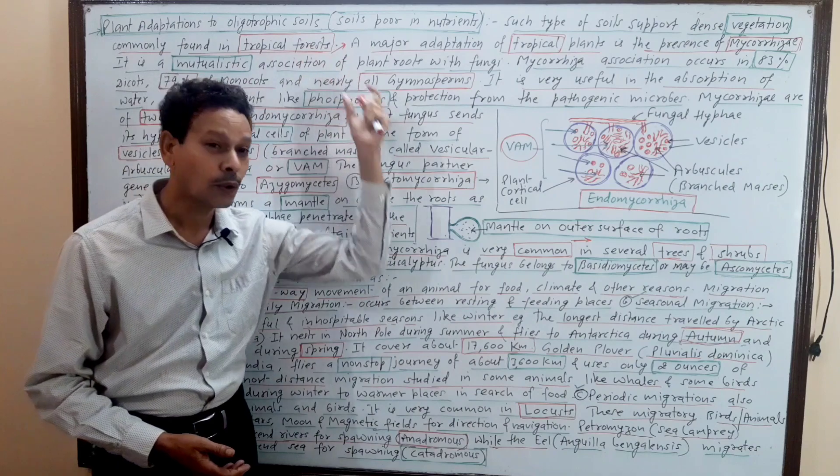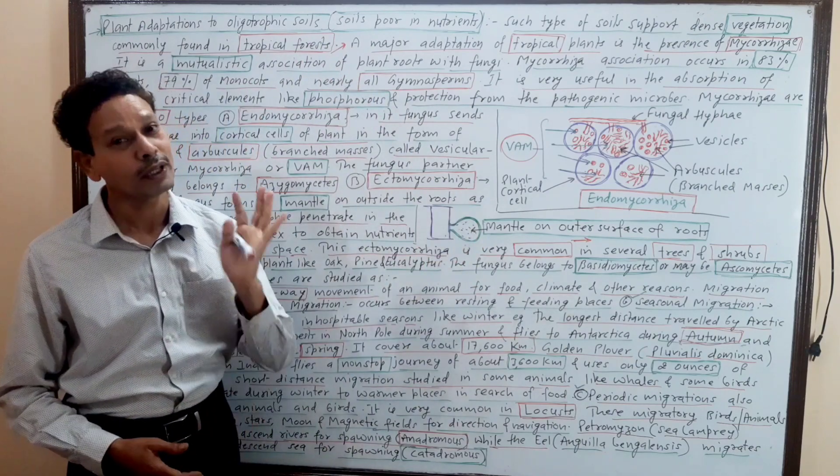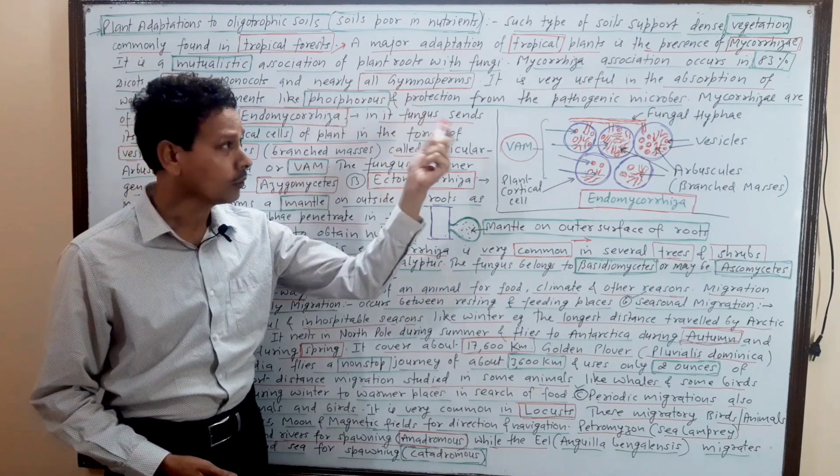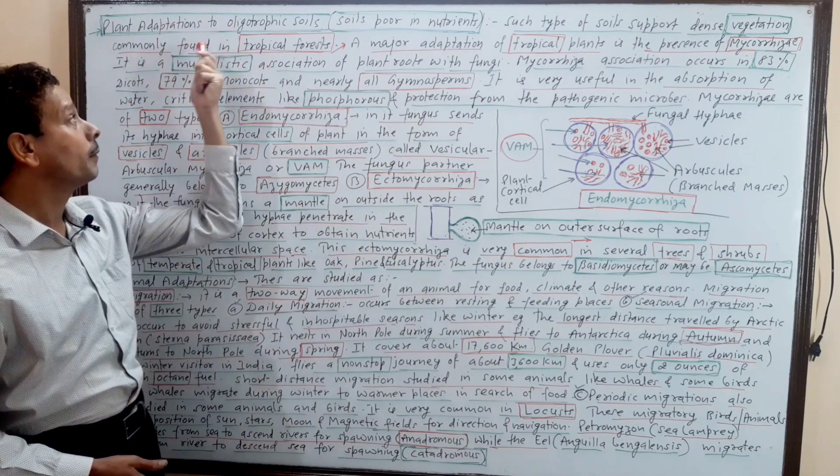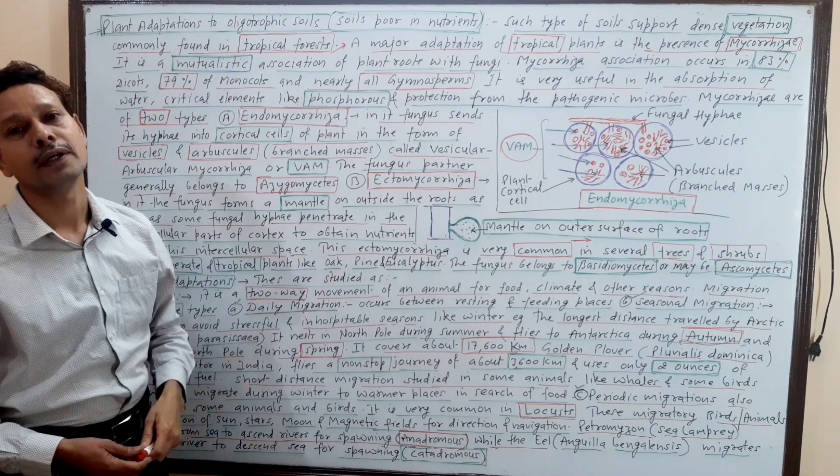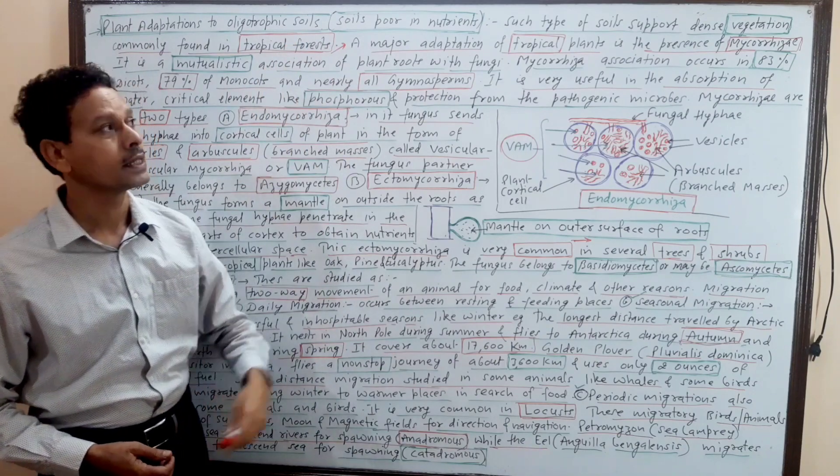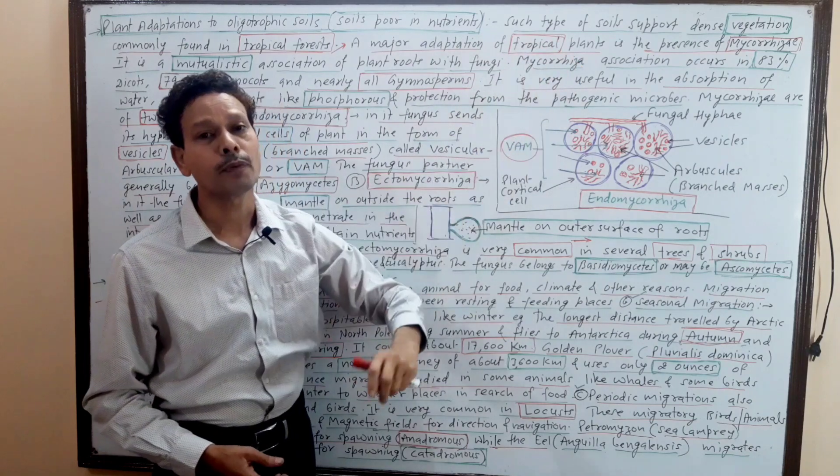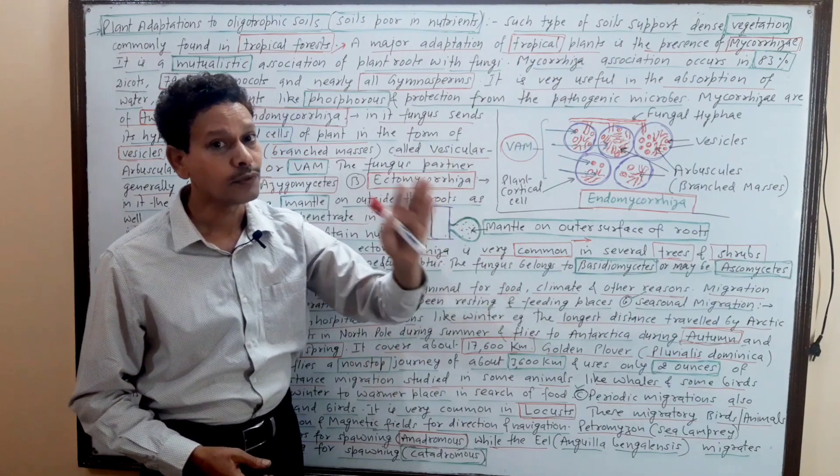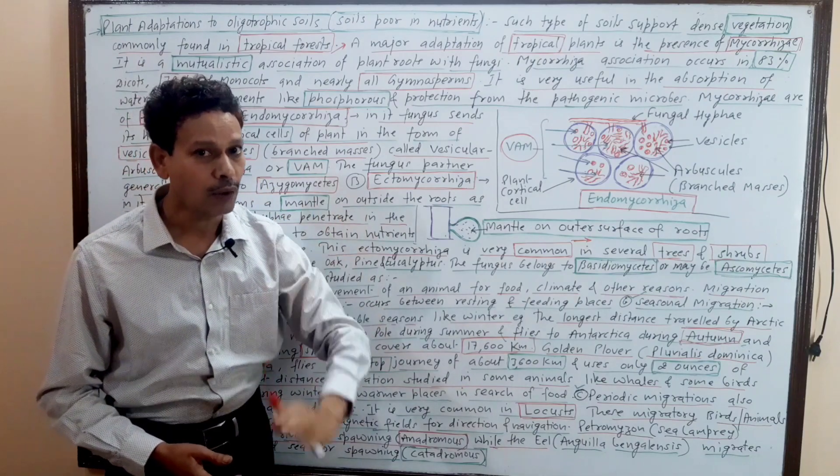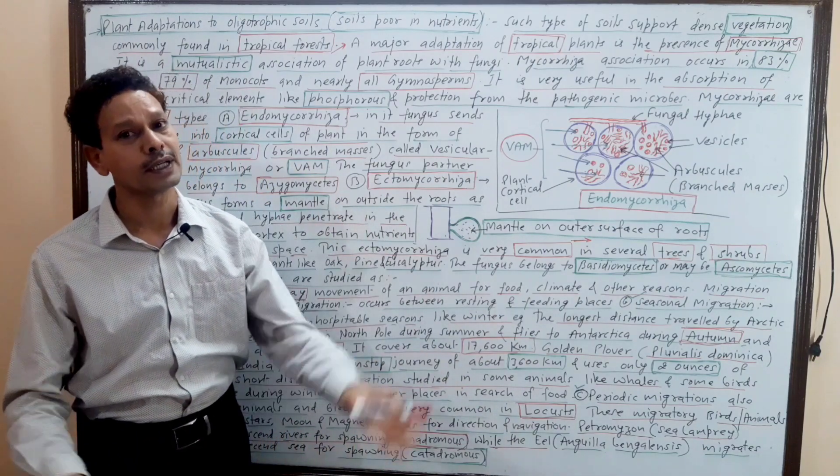These notes are quite enough, more than enough. So what do you want to know about plant adaptations to oligotrophic soil? We have said that the soil is poor in nutrients. Such type of soil supports dense vegetation, because dense vegetation allows more accumulation of nutrients in soil.